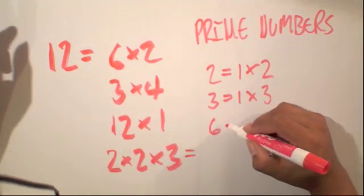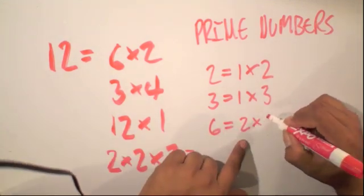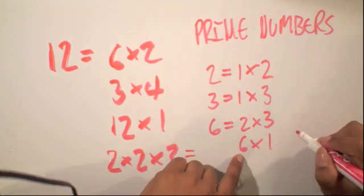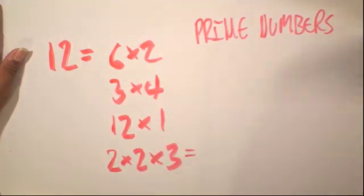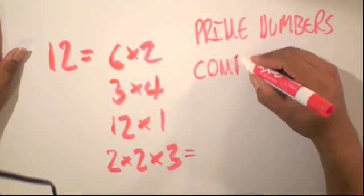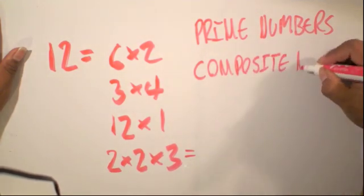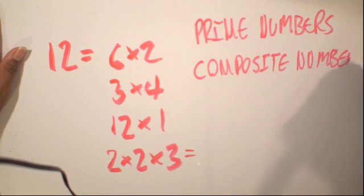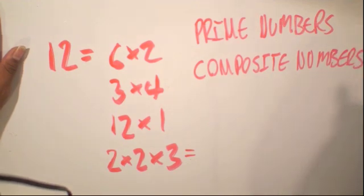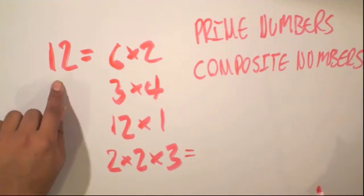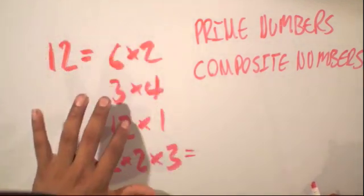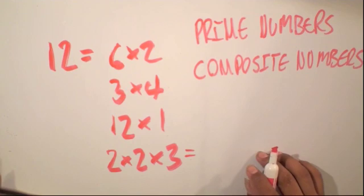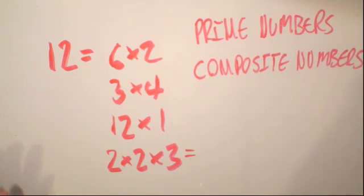6 is not a prime number because it contains more than 2 factors, which are 2 times 3 and 6 times 1. So because it's not a prime number, we call it a composite number. Composite numbers are numbers that contain more than 2 factors. So 12 is an example of a composite number because it contains more than 2 factors — 1, 2, 3, 4, 5, 6 different factors. This is the notion of prime and composite numbers.